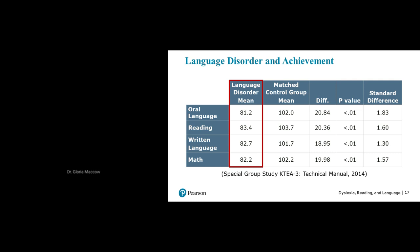When thinking about typical disorders of written language, you think about word recognition — struggling with accuracy or fluency of word recognition — or struggling with reading comprehension. For written language, either decoding, word recognition, comprehension, written spelling, or written expression. We looked at data from a special group study conducted during standardization of the Kaufman Test of Educational Achievement, Third Edition. I pulled out some information — much more is in the technical manual.